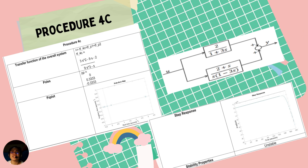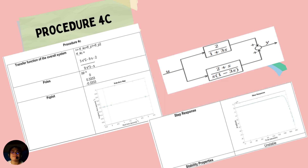For procedure 4c, given a parallel loop again, simplified by adding the two systems through MATLAB, we have our poles, PZ plot, and step response impulse presenting an unstable system.